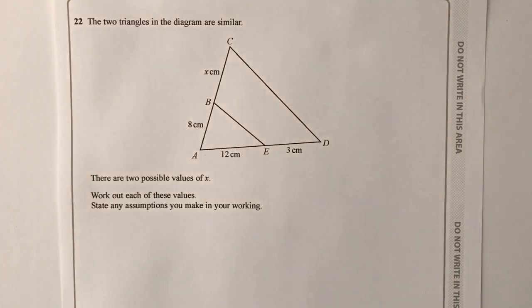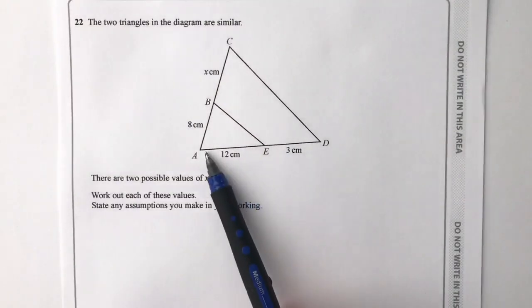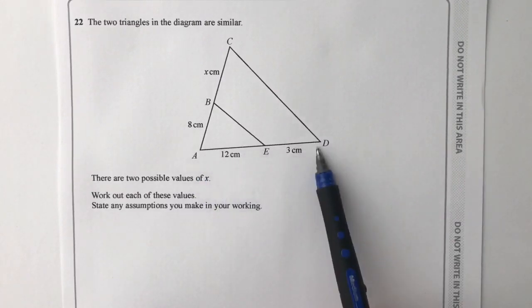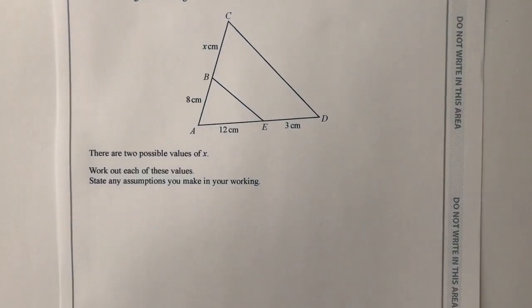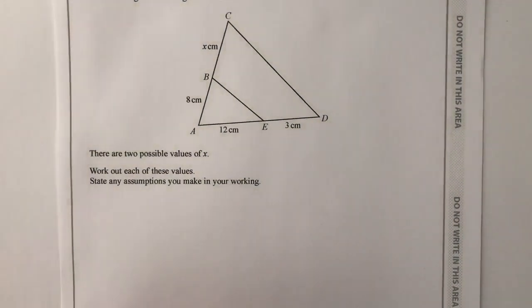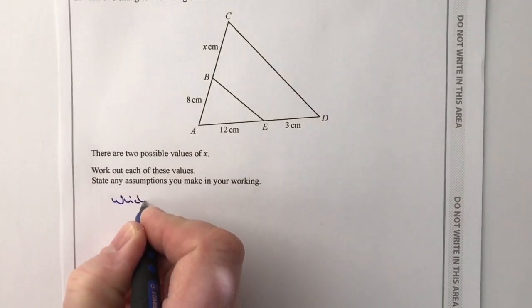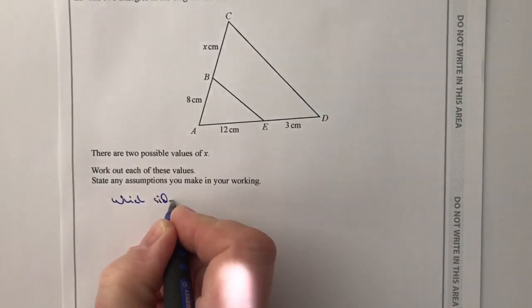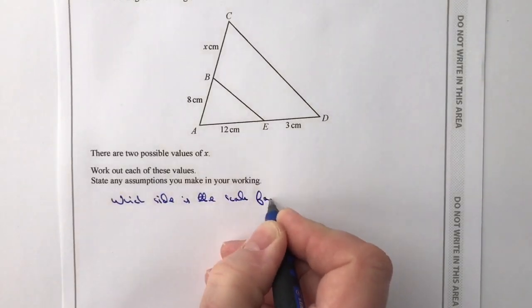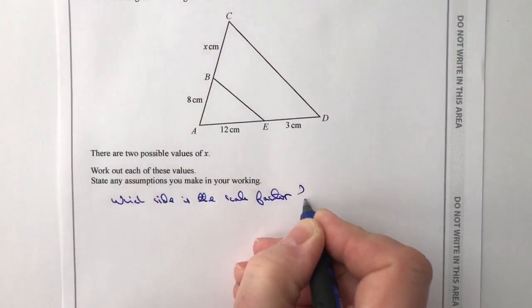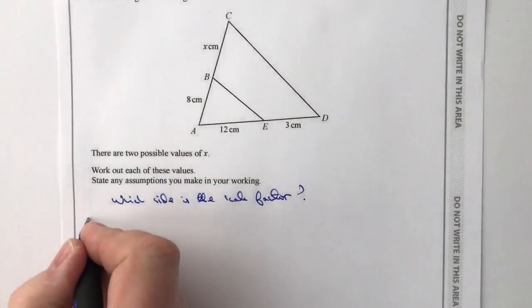Well, it's a bit of an interesting one this, because on first glance it looks like as it's drawn, you've got a fairly clear scale factor between AE through to AD. So let's just have a look at that, because essentially we've got two scenarios and they're both kind of can be summarised as which side is the scale factor. Let me kind of explain that if I can a little bit.